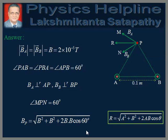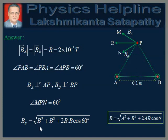We will use the expression for the magnitude of the resultant of two vectors A and B: R equals root over A-squared plus B-squared plus 2AB cos theta. The resultant magnitude of the two magnetic fields at P, denoted BP, equals root over BA-squared plus BB-squared plus 2 into BA into BB into cos theta, where theta is 60 degrees.